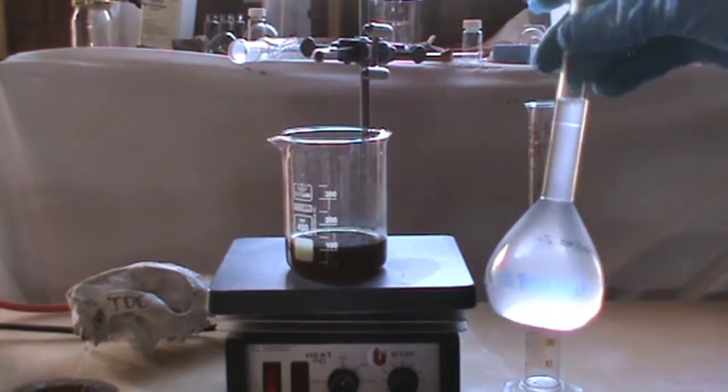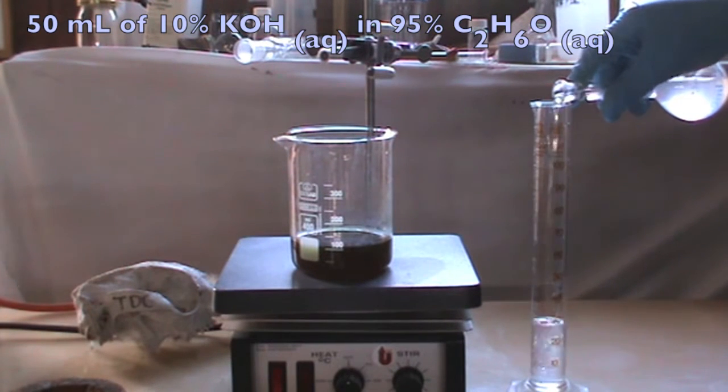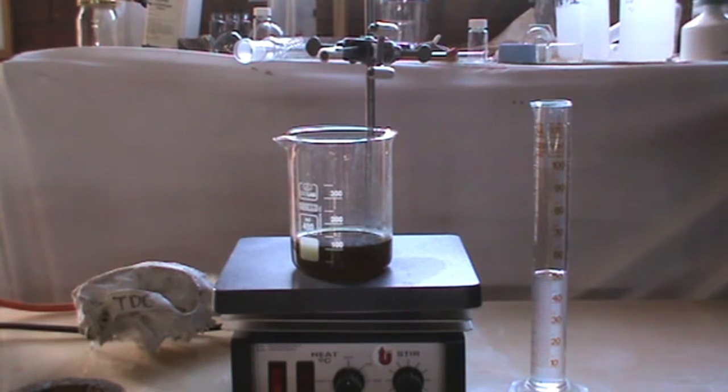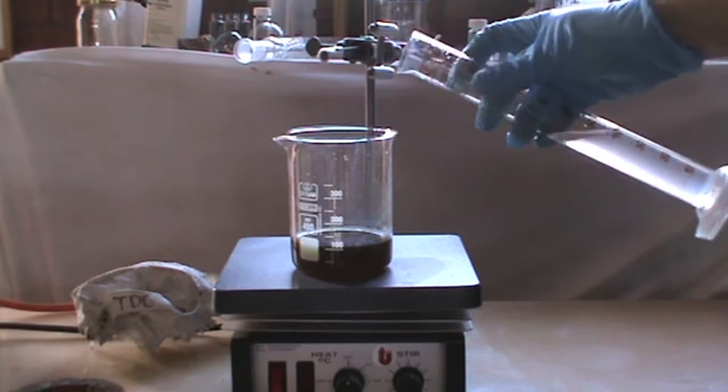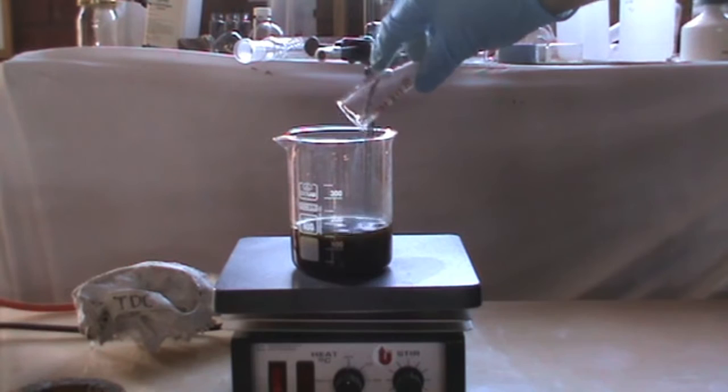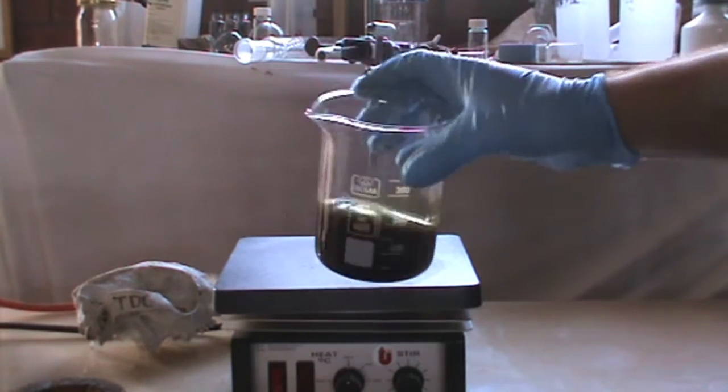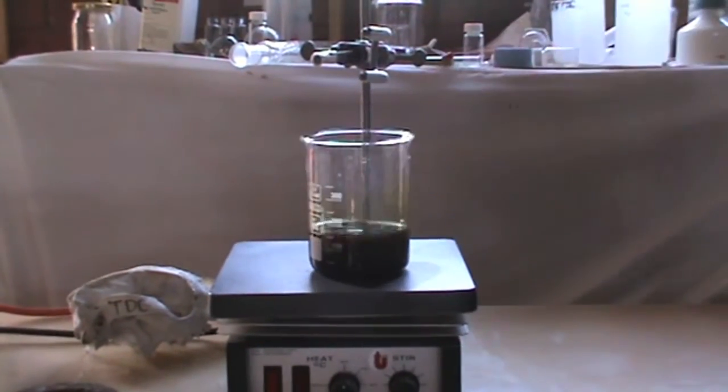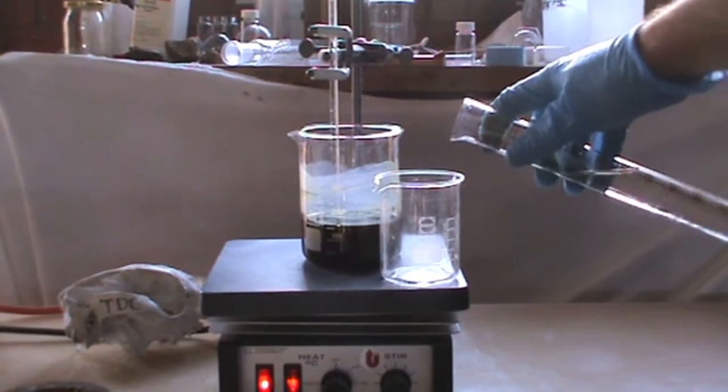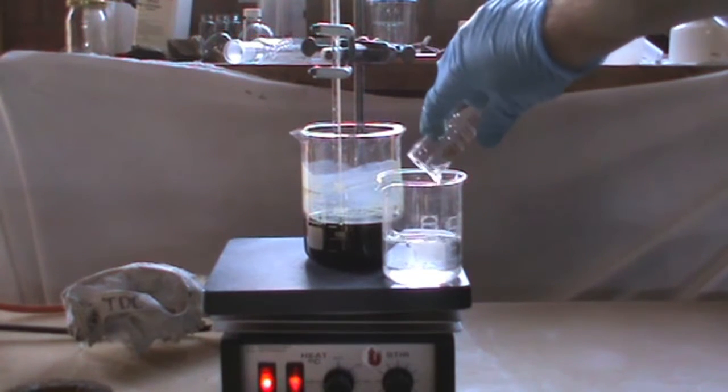After that, measure out 50 ml of 10% potassium hydroxide solution in 95% ethanol and pour it into the beaker containing the extract. In a separate beaker, add 65 ml of millipore water and heat the two beakers to about 60 to 70 degrees Celsius. Use a thermometer for indication.